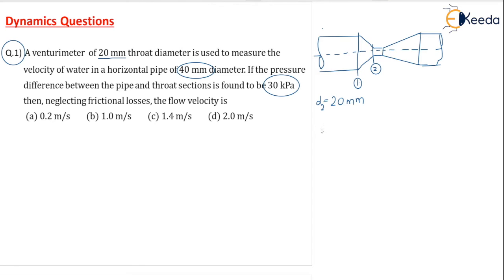It is used to measure the velocity of water in a horizontal pipe. You can see the pipe is horizontal. 40 mm diameter, so this is your D1. Whatever the pipe diameter, that will be the same diameter for the inlet of the venturi meter.